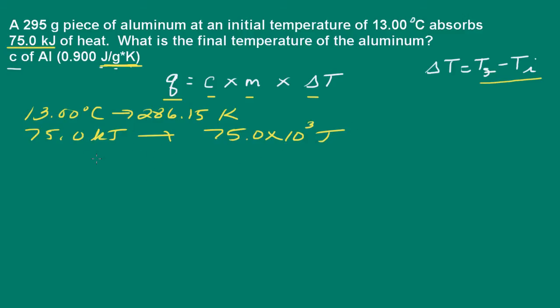So 75 kilojoules then is going to be 75 times 10 to the third joules. So we're all set now. What we should do is go ahead and solve our equation for delta T.